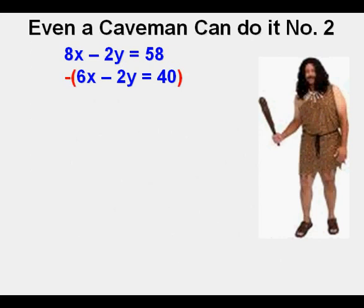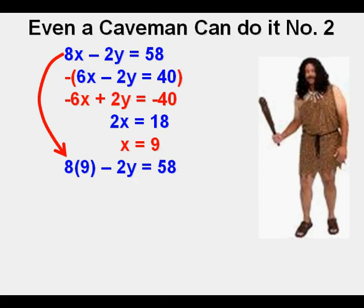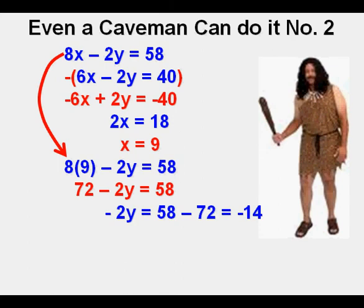The first thing Aug did was multiply the second equation by negative 1. This changed all the signs of that second equation, so now he has negative 6x plus 2y equals negative 40. Then, he added both the equations together, negative 2y plus 2y, cancel. He's left with 2x equals 18. Dividing 18 by 2, he has x equals 9. Next, he substitutes 9 for x in the second equation, so he has 8 times 9 minus 2x equals 58. He was left with 72 minus 2y equals 58. He gets rid of the 72 on the left by making it minus 72 on the right, so negative 2y equals 58 minus 72 equals negative 14. Finally, he divides both sides by negative 2 and gets y equals 7. He writes down his solution, the coordinates 9 comma 7.